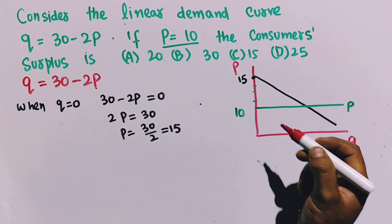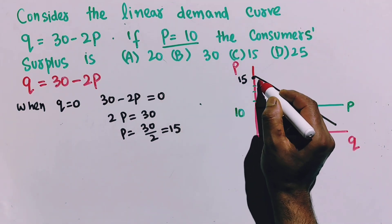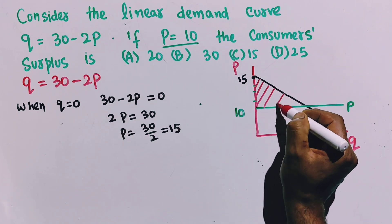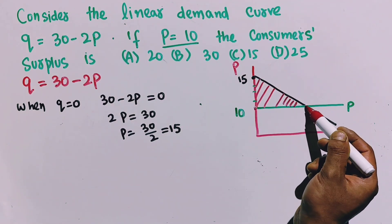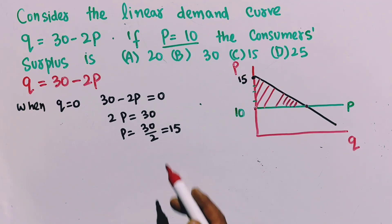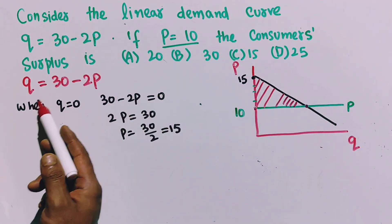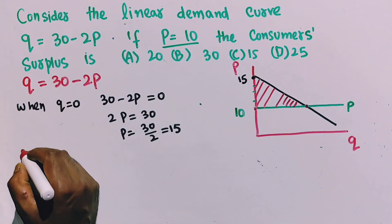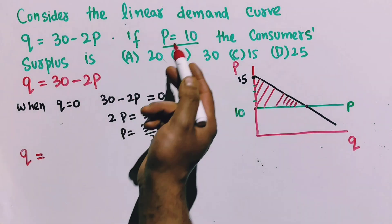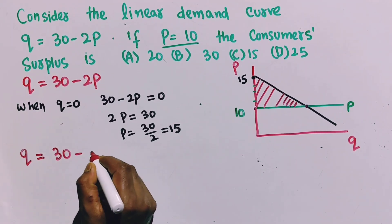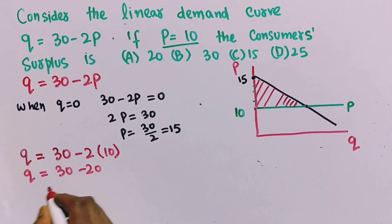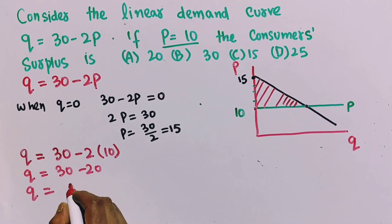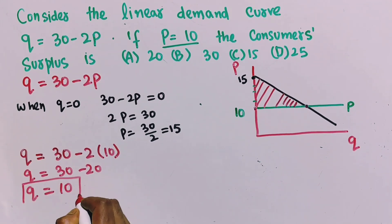Graphically, consumer surplus is the area above the equilibrium price and below the demand curve — the area of this triangle. To find that area, we need the quantity demanded when P = 10. Plugging P = 10 into the equation: Q = 30 - 2(10) = 30 - 20 = 10. So quantity demanded when price is $10 is also 10.